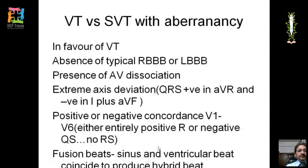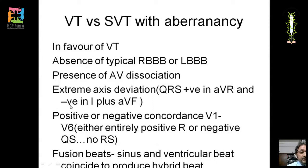To differentiate ventricular tachycardia from SVT with aberrancy: the two most important features favoring VT are absence of typical RBBB or LBBB morphology and presence of AV dissociation. Additional features include extreme axis deviation with positive QRS in AVR, concordance from V1 to V6 (all positive or all negative with no RS transition), and fusion beats. However, AV dissociation and absence of RBBB/LBBB morphology are the key criteria.